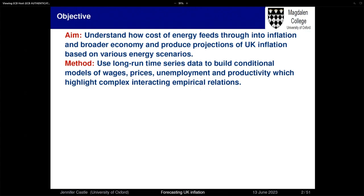The methods we're going to use look at very long-run time series of data — about 160 years. The advantage of doing so is that we've had shocks like this in the past: wars, pandemics, and huge inflation spikes. Using a long-run time series enables us to identify the model. I'm going to build four different models — all conditional models — of wages, prices, unemployment, and productivity. There's quite a lot of non-linearity feeding through, and we test for super exogeneity for each equation, then combine all those equations into a system at the end.